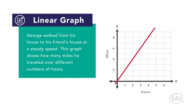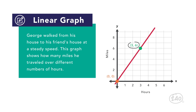First, notice the units on the x and y axes. The x-axis is labeled hours and the y-axis is labeled miles. Every ordered pair or x-y coordinate that falls on the line represents a combination of hours represented by x and miles represented by y. The ordered pair (0,0) means that after zero hours, George has traveled zero miles. This point represents when George has not yet left his house. The ordered pair (3,6) shows that after three hours, George has gone six miles.